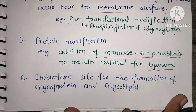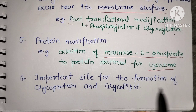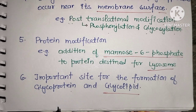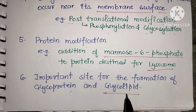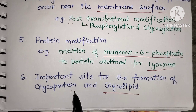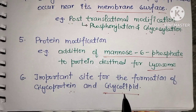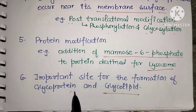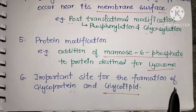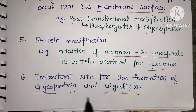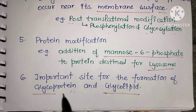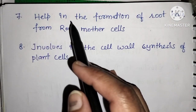The Golgi apparatus is an important site for the formation of glycoproteins and glycolipids. The smooth endoplasmic reticulum performs lipid synthesis, and the Golgi apparatus performs further modification of these lipids. The rough endoplasmic reticulum performs protein synthesis, and the Golgi apparatus is critical for glycoprotein and glycolipid formation by attaching carbohydrates to proteins and lipids.